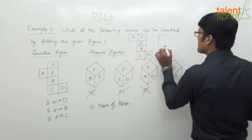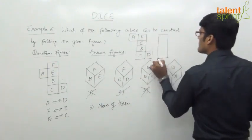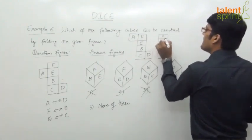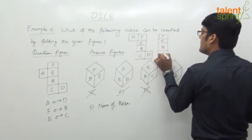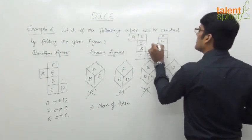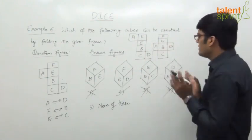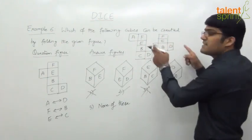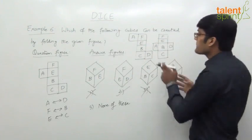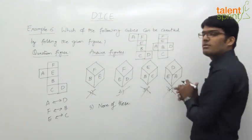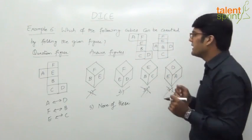Another way of giving the figure: draw it out — F, E, B, C in a line with A and D as extensions. The extensions A and D are opposite. E is opposite to C. F is opposite to B. So there are different ways of drawing the open figure, but the rule stays the same.